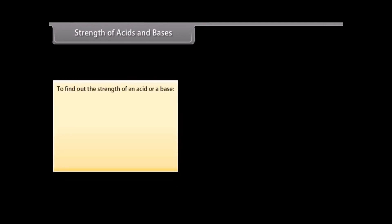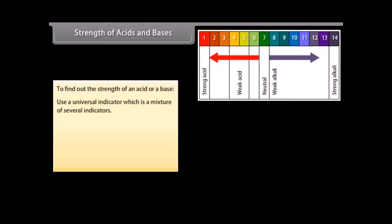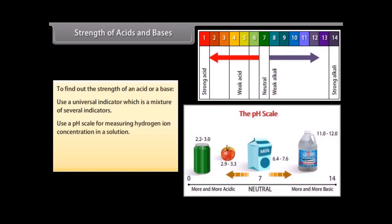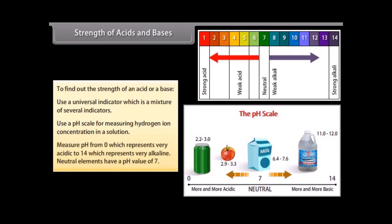Strength of acids and bases. You need to use a universal indicator to find the amounts of ions present in a solution or to find out how strong an acid or base is. The universal indicator is a mixture of several indicators. It shows different colors at different concentrations of hydrogen ions in a solution. A pH scale is a scale for measuring hydrogen ion concentration in a solution. You can measure pH from 0, which represents very acidic, to 14, which represents very alkaline. Neutral elements have a pH value of 7.